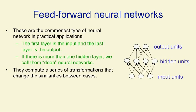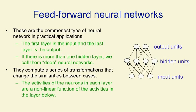So in speech recognition, for example, we'd like the same thing said by different speakers to become more similar, and different things said by the same speaker to become less similar, as we go up through the layers of the network. In order to achieve this, we need the activities of the neurons in each layer to be a non-linear function of the activities in the layer below.